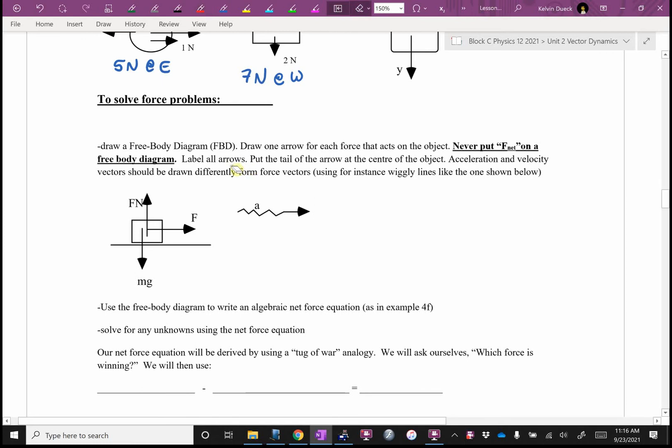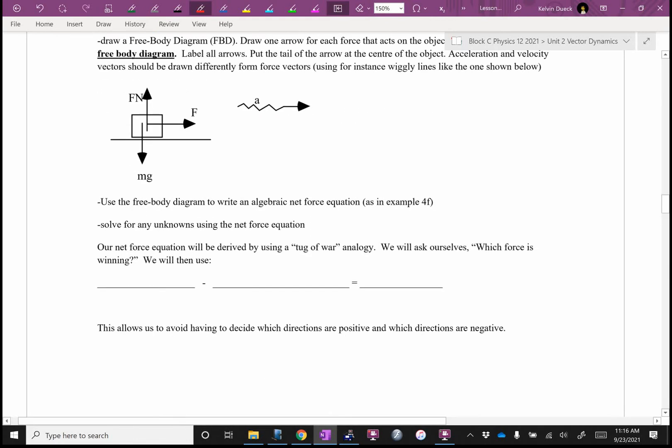We're going to label all our arrows. I usually put the tail of the arrow at the center of the object unless it's just awkward. My friend who actually typed these notes up, he also adds acceleration and velocity with squiggly arrows. I tend to just put forces on my free body diagrams most of the time. And then we're going to use our knowledge of Newton's laws, Newton's first and Newton's third, to figure out if we're missing any forces.